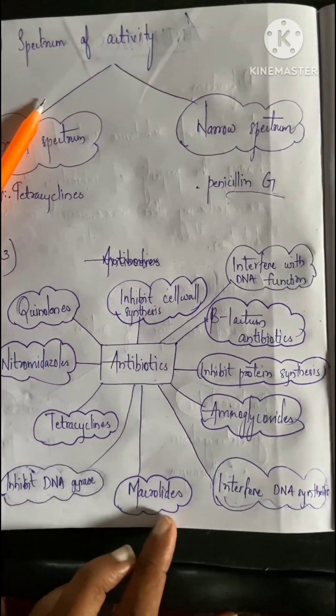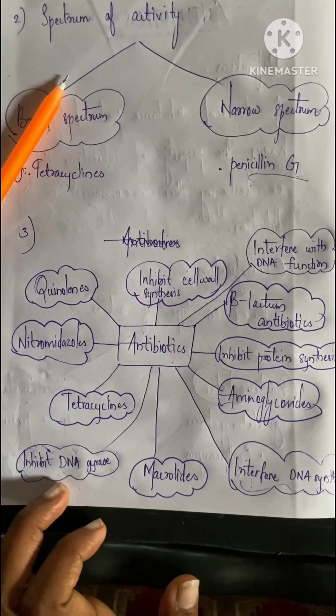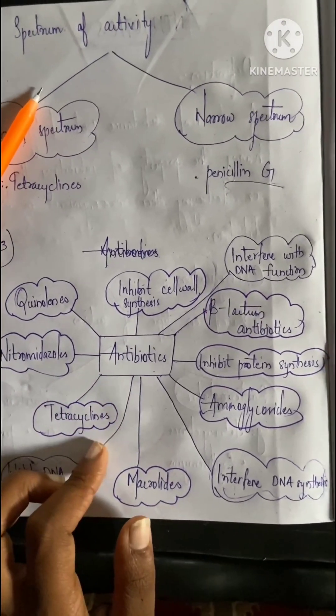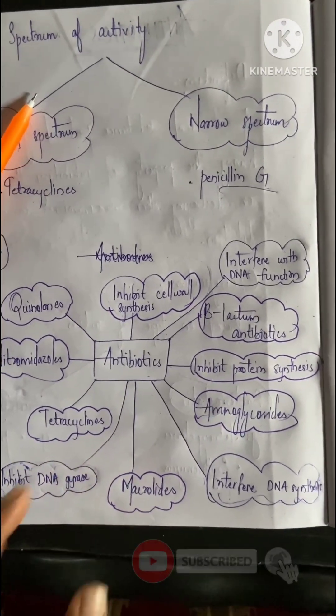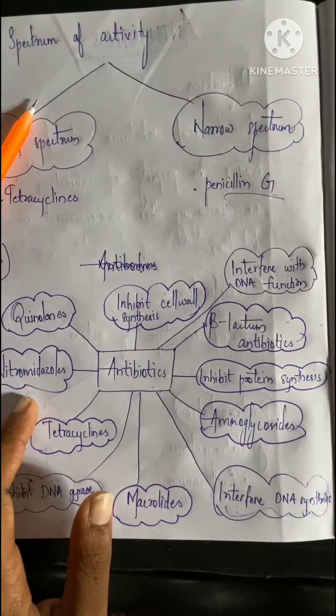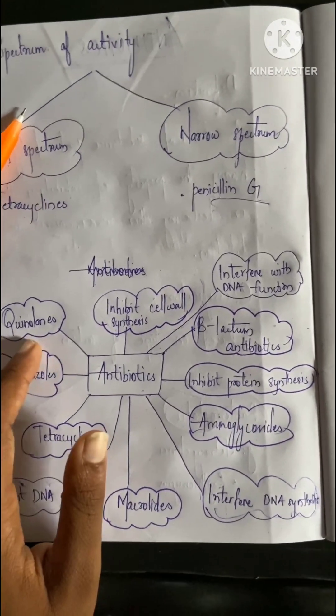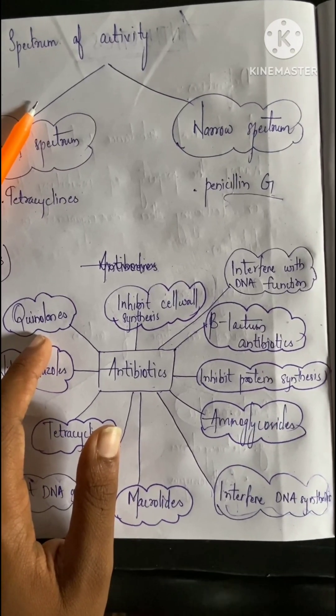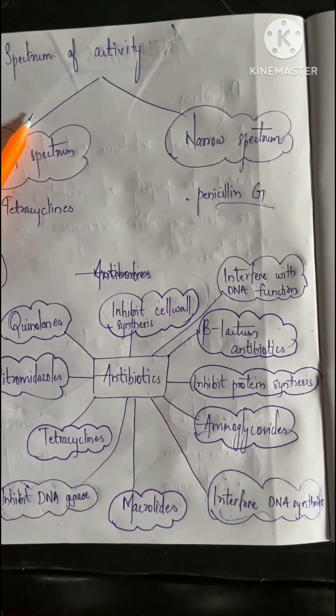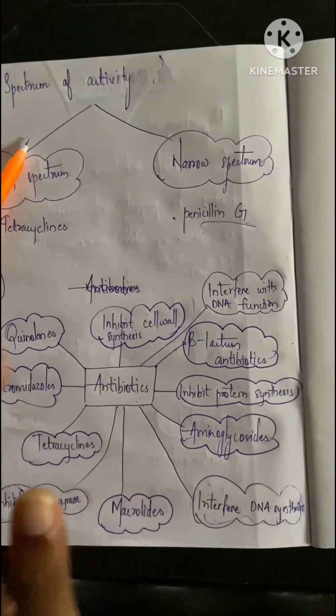Next is inhibit DNA gyrase - the example is tetracycline and doxycycline. Next is nitroimidazoles - examples are metronidazole and tinidazole. Next comes quinolones - examples are ciprofloxacin, norfloxacin, and ofloxacin. So these are all the important classifications of antibiotics.